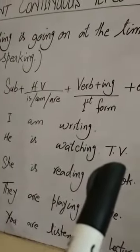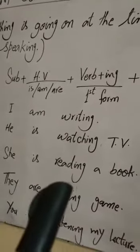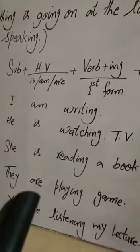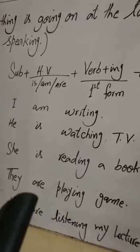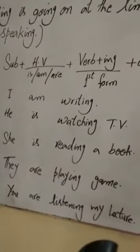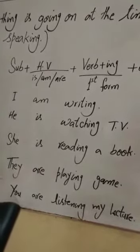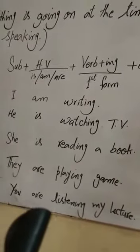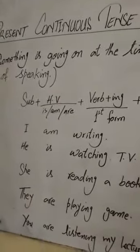He is watching TV — وہ TV دیکھ رہا ہے۔ He is reading a book — وہ ایک کتاب پڑھ رہا ہے۔ They are playing game — اب یہاں پر ہم نے are کا use کیا ہے کیونکہ they plural ہے۔ Plural کے لیے ہم are کا use کرتے ہیں۔ You are listening my lecture — you singular اور plural دونوں کے لیے یوز ہوتا ہے لیکن دونوں صورتوں میں are ہی use کرنا ہے۔ تو یہ تھا present continuous tense۔